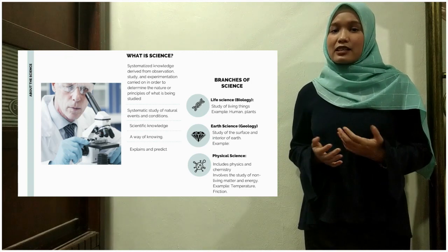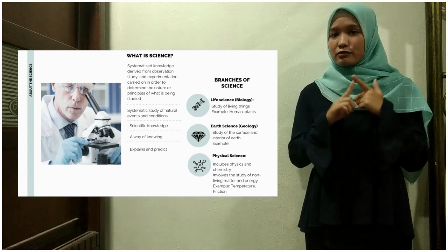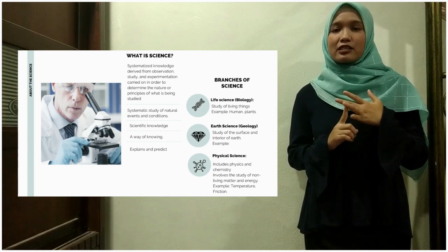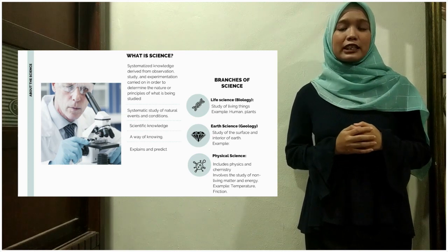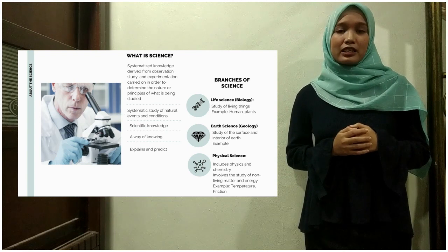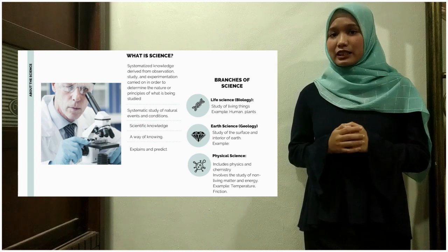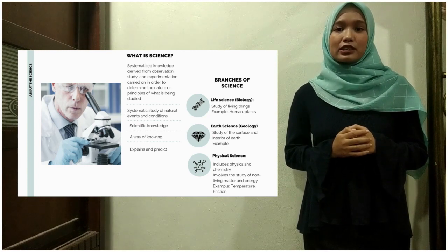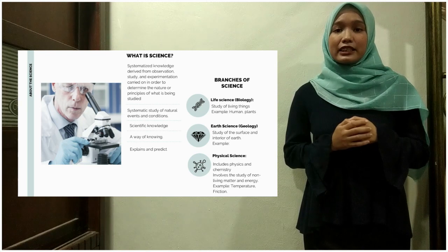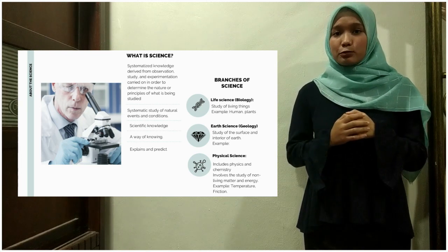What is science? Science is systematized knowledge that is derived from observation, study, and experimentation that is carried out in order to determine the nature or principle of what is being studied. It is also known as a systematic study of natural events and conditions or scientific knowledge. However, science has three branches.